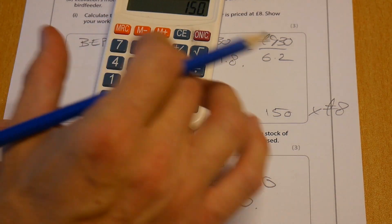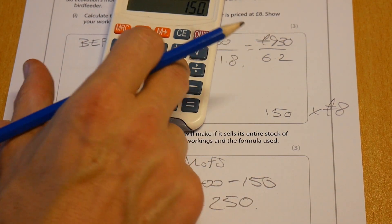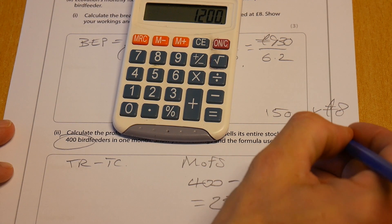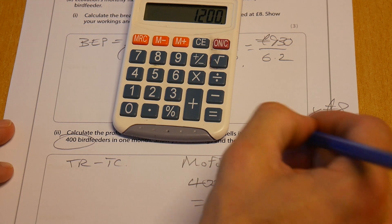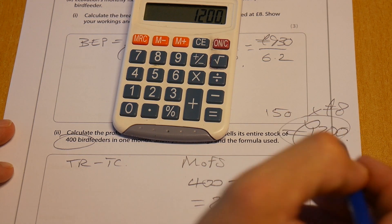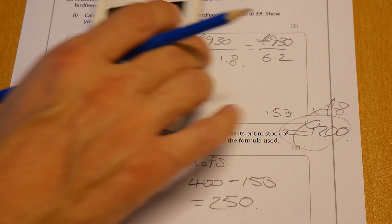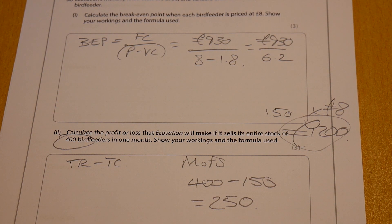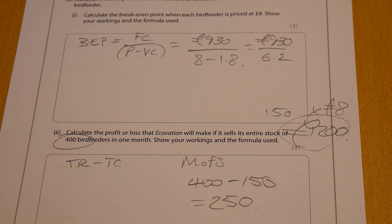So your break-even point in currency would therefore be 150 times eight pounds equals 1200. So the actual revenue needed to break even is 1200 pounds. That's the break-even in currency. Nice one, we really are done now. Thanks guys.